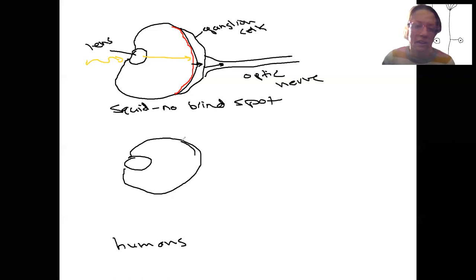Here's our ganglion cells. Our retina is such that the photoreceptors are in back of the ganglion cells. I suppose I should label for both of these. This is our retina. This is our photoreceptors.